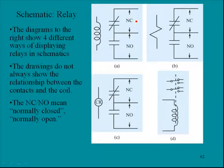And these are some schematic symbols that you might see for relays. And I'm not going to go into these, but these are just representative of the different types of schematics you might see. The drawings do not always show the relationship between the contacts and the coil. For example here, you see the coil, you see the contacts, but there's no idea of how these are tied together. And that's commonly the way they'll be shown on schematics. And then you see the NC and the NO. The NC means normally closed and the NO means normally open.